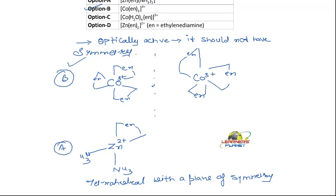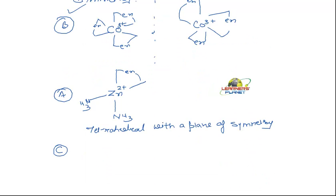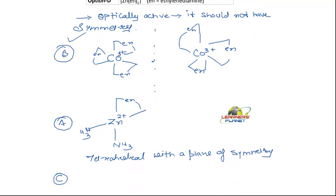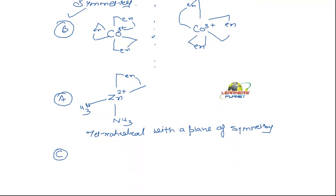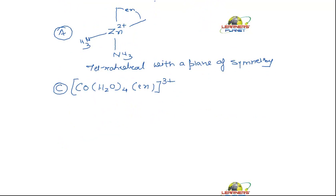Non-superimposable images are formed. Now if I take up C, what will C be? Cobalt with water molecules, so it is [Co(H₂O)₄(en)]³⁺. If I draw the structure, what will be the structure, students?